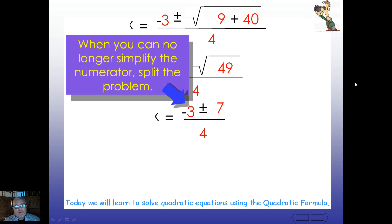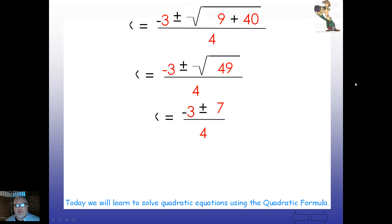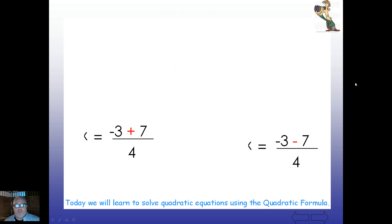So, when we get to this point here, we're going to have a simplified numerator that has to have two different equations. We're going to have negative 3 plus 7 over 4, and negative 3 minus 7 over 4. So, let's go ahead and look at these individually now, just like we've done in the past. Negative 3 plus 7 over 4, that gives us 4 over 4, which of course is 1.